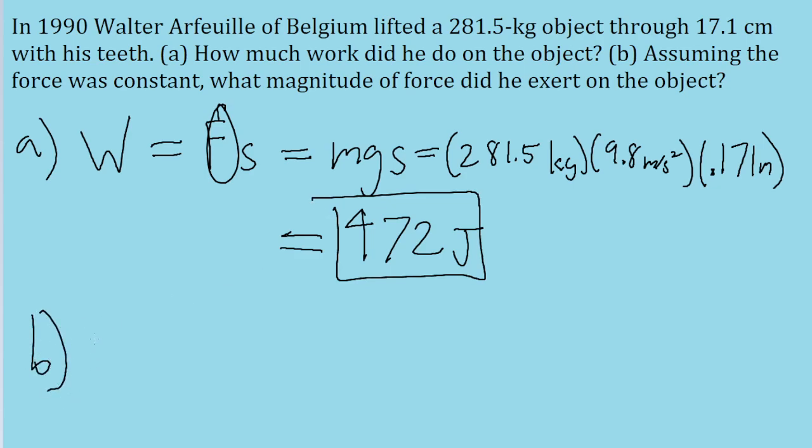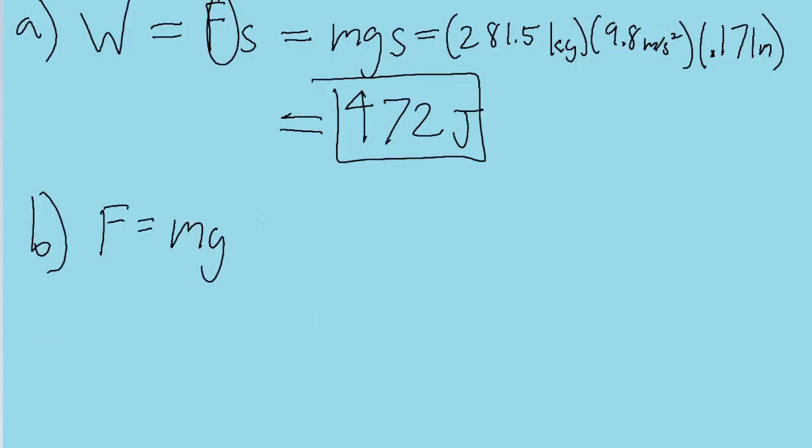Now let's talk about part b, which just asks about what magnitude of force was exerted on the object. Now we actually already kind of discussed the force in part a, because it's just going to be the weight of the object, or mg.